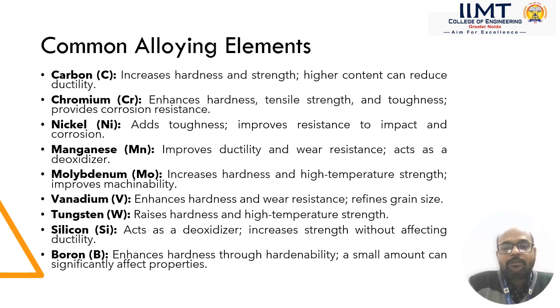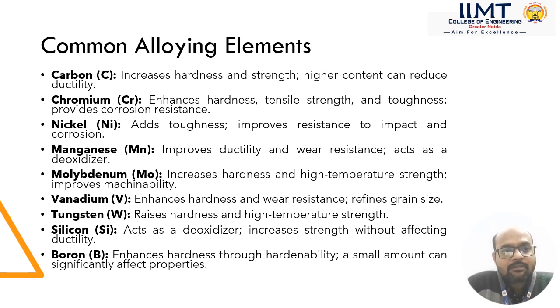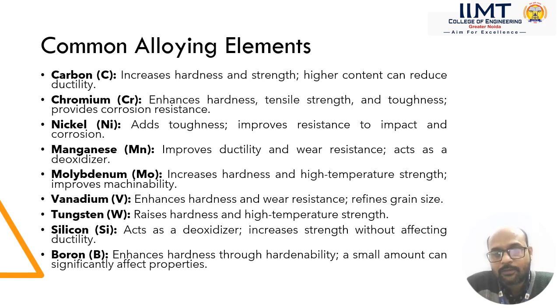The common alloying elements for steel are carbon, chromium, nickel, manganese, molybdenum, vanadium, tungsten, silicon and boron.